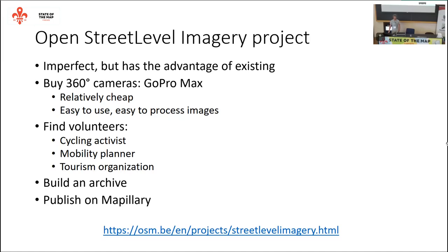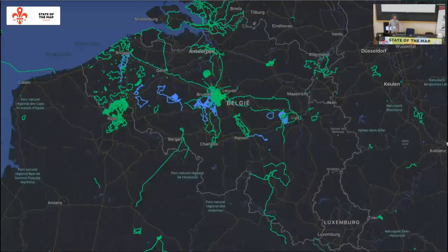Right now we only publish them on Mapillary because it's so practical. But we're also building an offline archive so that other users who want to do something with the images can access them. We've been on this since March of this year and the blue coverage on the map is what we managed to do — which I think for the time we've been working on it is okay.